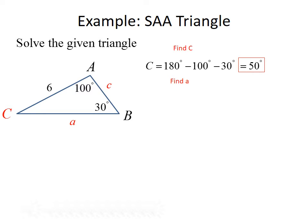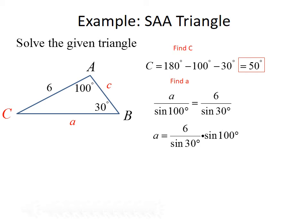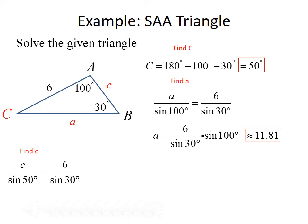We find side a using the Law of Sines: a divided by sine of 100 equals 6 divided by sine of 30. Multiplying both sides by sine of 100, a equals 6 over sine of 30 times sine of 100, which is approximately 11.81 units. For side c: c divided by sine of 50 equals 6 divided by sine of 30. Solving gives c equals 6 over sine of 30 times sine of 50, approximately 9.19 units, completing the triangle.